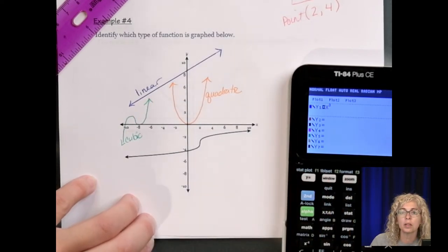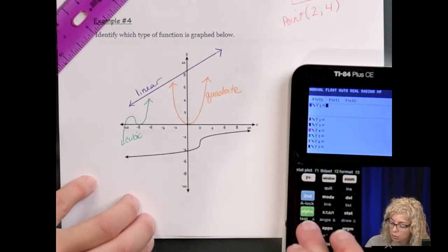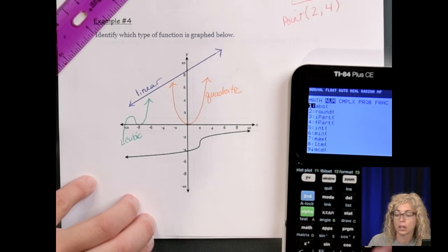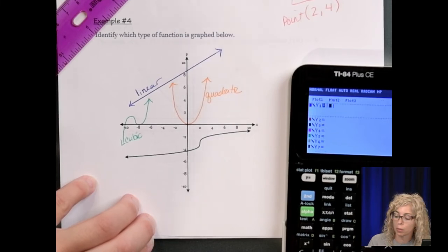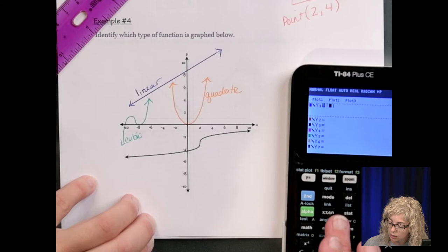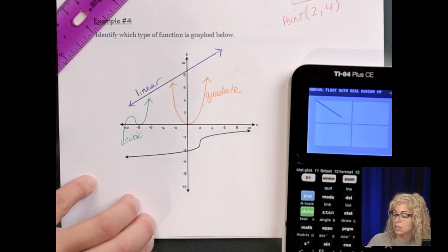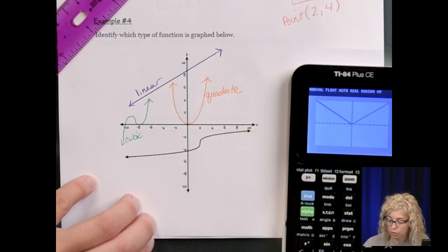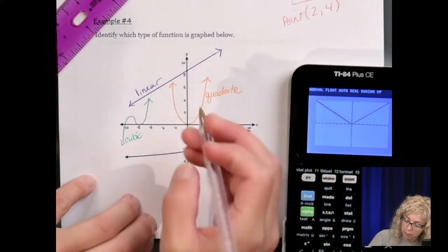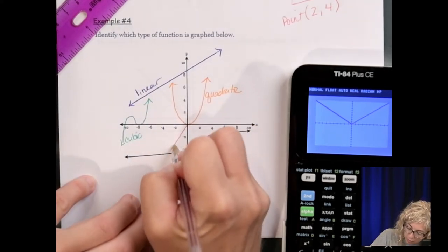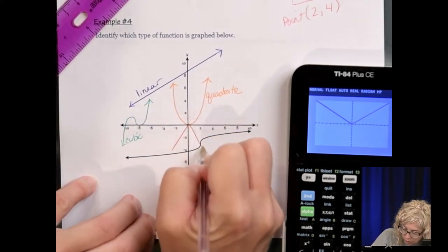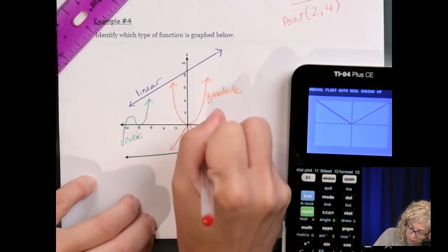Absolute value. Now to get the absolute value button, we need to go to math. Go into the number column and it's abs. So if I want to see the absolute value of x, I'm going to hit there. Graph. So we can see that's the v-shape. So any v-shape. Let's use red. But I'm going to put the v upside down. So that would be negative absolute value. So here's our absolute value.